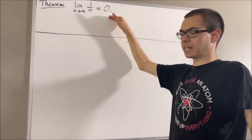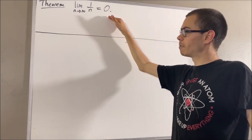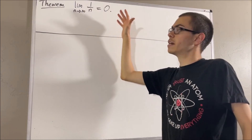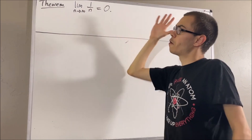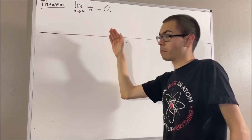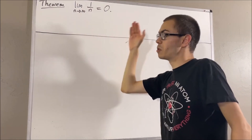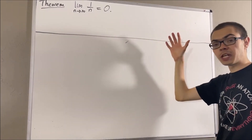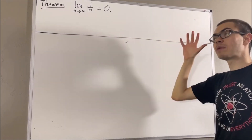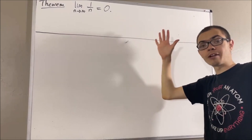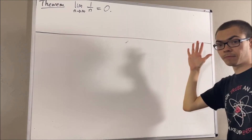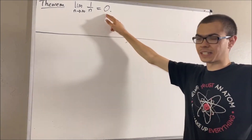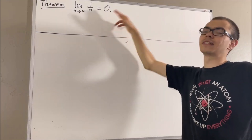But what does this mean? Well, by definition of the limit of a sequence, it means that for every epsilon greater than 0, there exists a positive integer k, such that for all positive integers n greater than or equal to k, the absolute value of 1 over n minus 0 is less than epsilon.